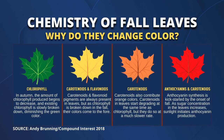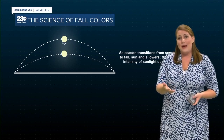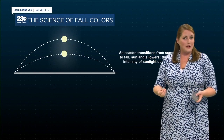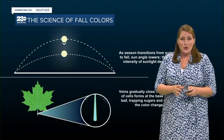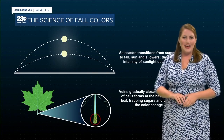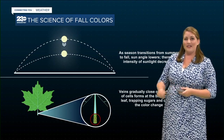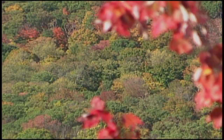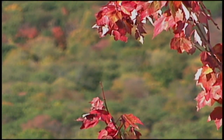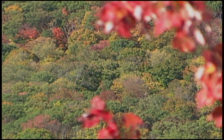Now, the timing of color change and the onset of falling leaves is governed by the calendar — as the sun lowers and the intensity of light decreases, the days shorten and the nights grow longer. Biochemical processes begin within the leaves: the veins carrying nutrients into and out of the leaf gradually close off, and a layer of cells forms at the base of each leaf. These clogged veins trap sugars in the leaf and promote production of anthocyanin. Once this separation layer is complete and the connecting tissues are sealed off, the leaf is ready to fall.